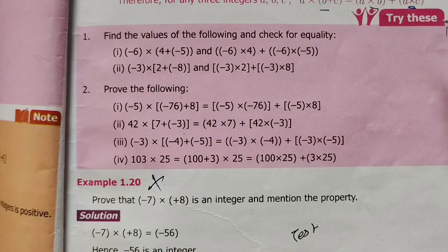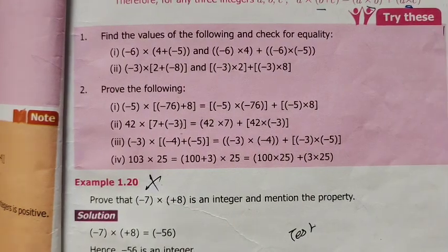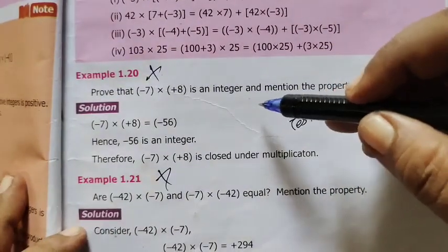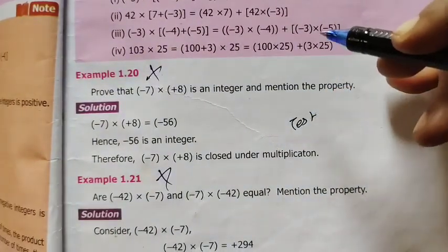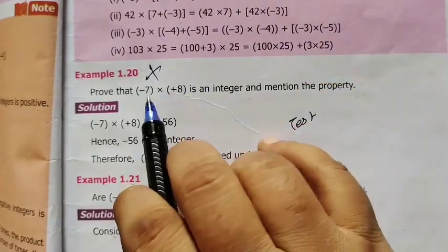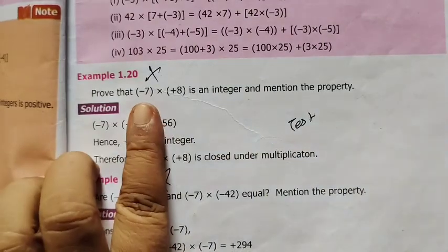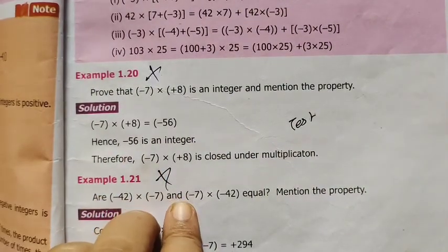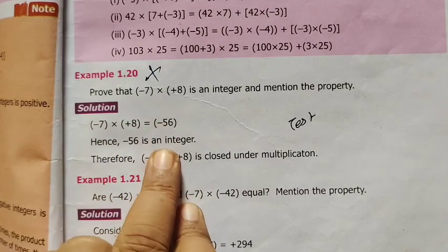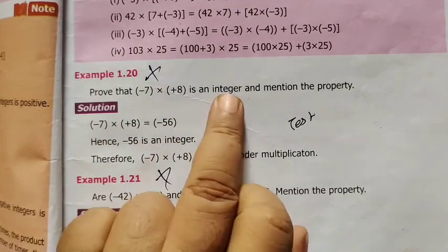For Example 1.20, prove that (-7) × (+8) is an integer and mention the property. The property is mentioned. Now here is minus 7. Just say first sign is first. If you multiply it, it is minus 56. This is an integer.